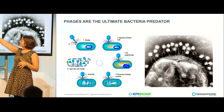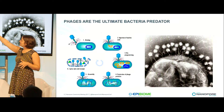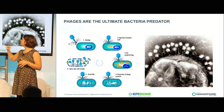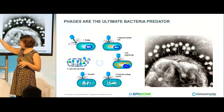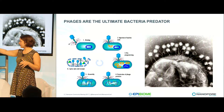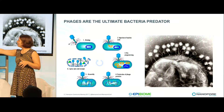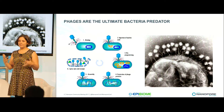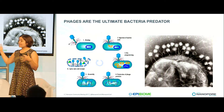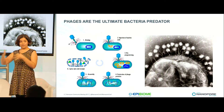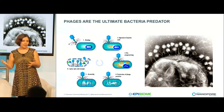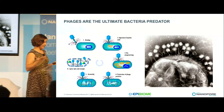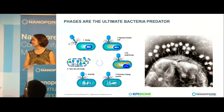After the phage recognizes the cell and injects the DNA into the cell, it takes over, builds lots of baby phages, which then explode the cell, killing it, and allowing it to exponentially amplify and go find other bacterial — pathogenic — cells to kill.